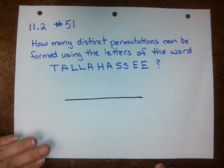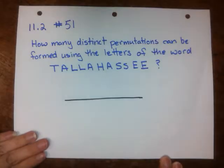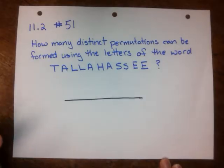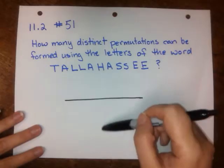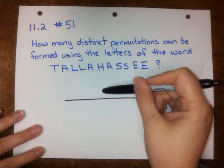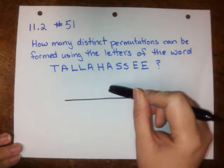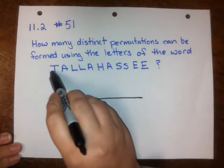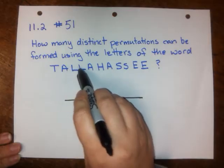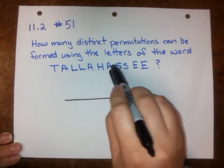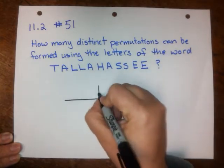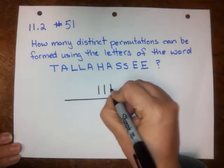Number 51 from 11.2. They're asking us how many distinct permutations can be formed using the letters of the word Tallahassee. The way to figure this out is we're going to make a fraction. The top of the fraction is going to be a factorial. To figure out what factorial that is, we need to count all of the letters in the word. In this case we have 11 letters, so the top of our fraction is going to be 11 factorial.